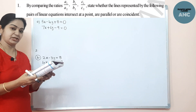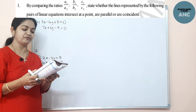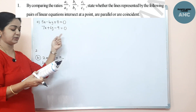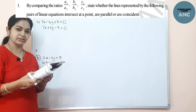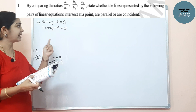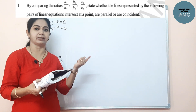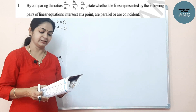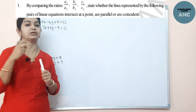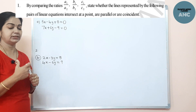By comparing the ratios a1 by a2, b1 by b2, and c1 by c2, find out whether the lines represented by the following pairs of linear equations intersect at a point, are parallel, or are coincident. Just by comparing the ratios we have to find out if they are parallel, coincident, or intersecting. You have to know the concept before dealing with the exercise problems.